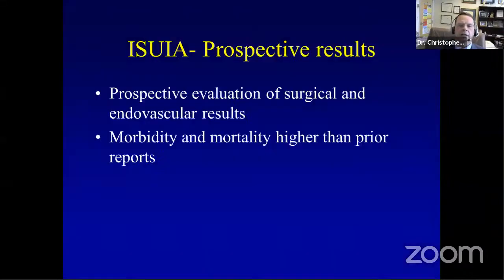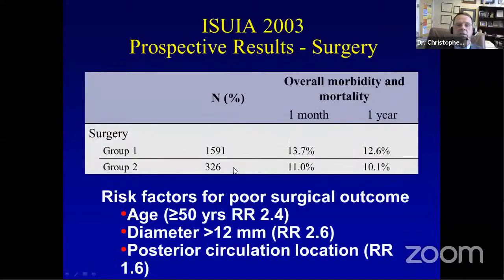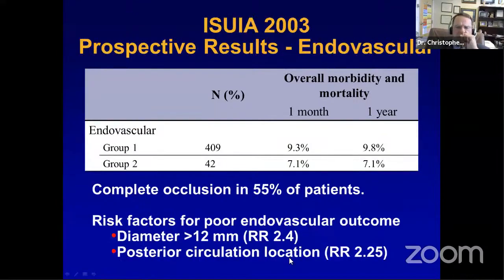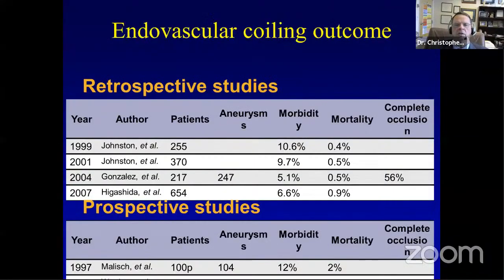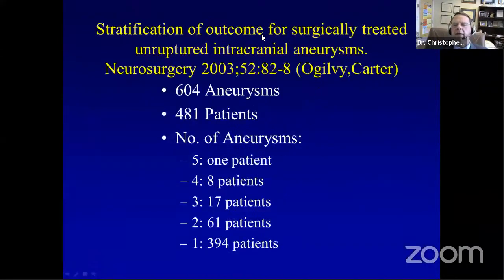Regarding treatment-related risk: the ISUIA prospective arm showed morbidity and mortality higher than previously reported, with double-digit complication rates when cognitive outcomes were included. Patients walked and talked but had significant cognitive issues. Risk factors associated with poor outcome were older age, larger lesions, and posterior circulation location. The same was true to an extent for endovascular results, though the endovascular group in that series was too small for meaningful conclusions.